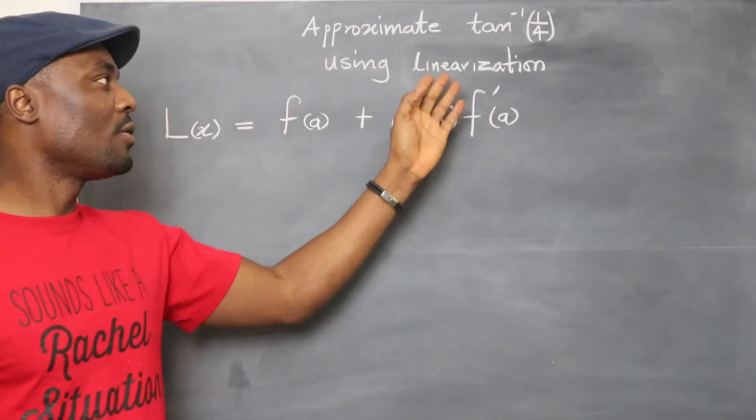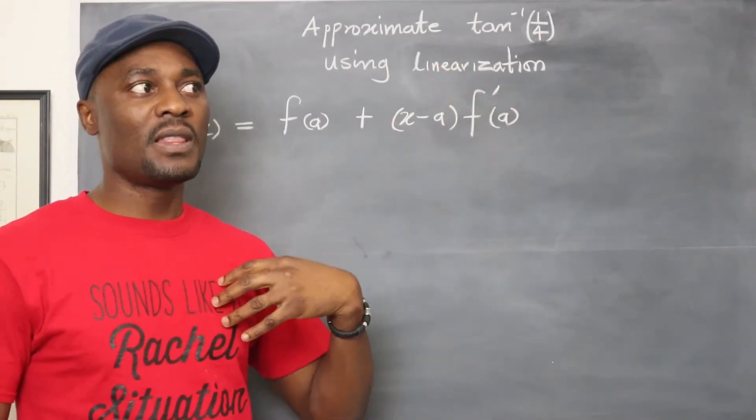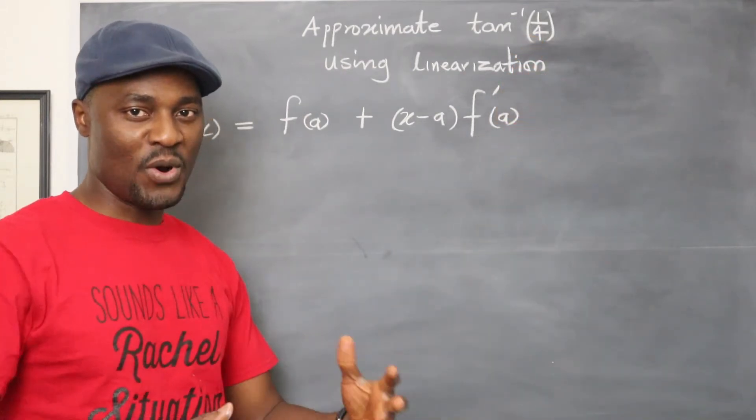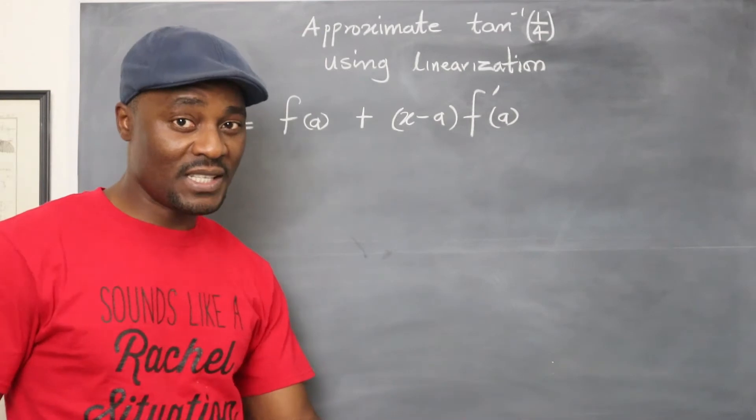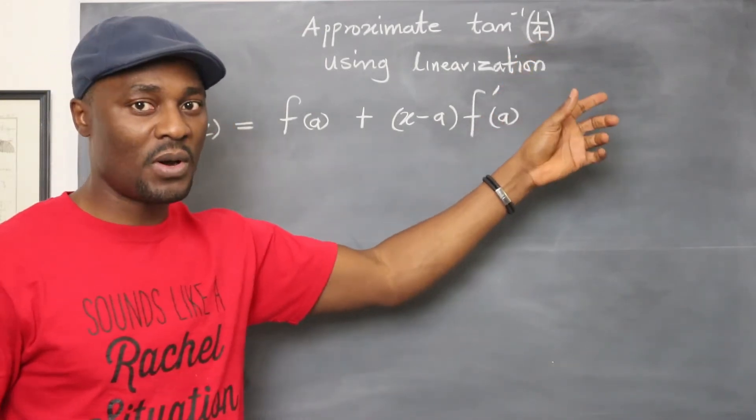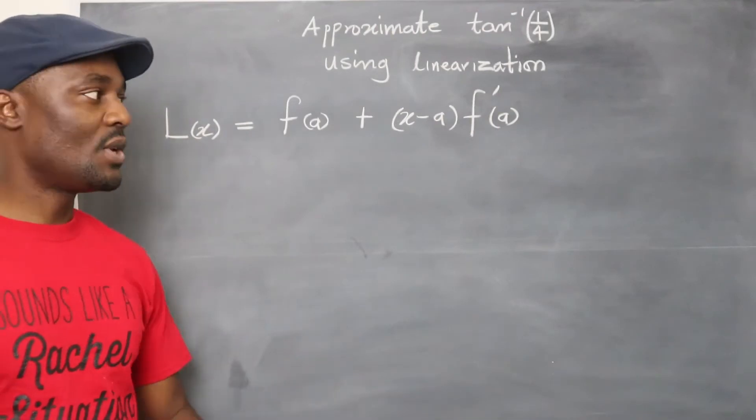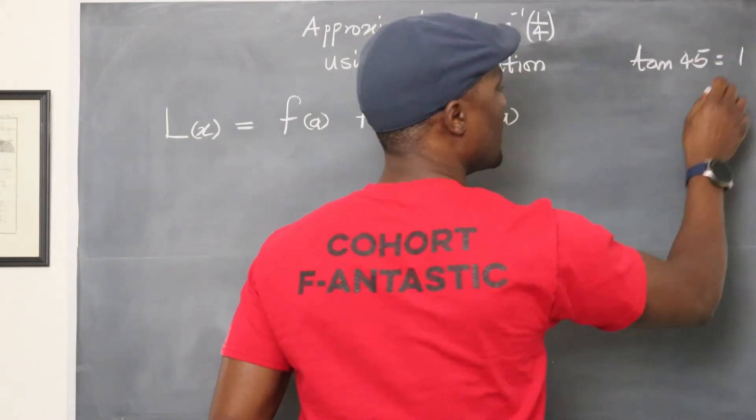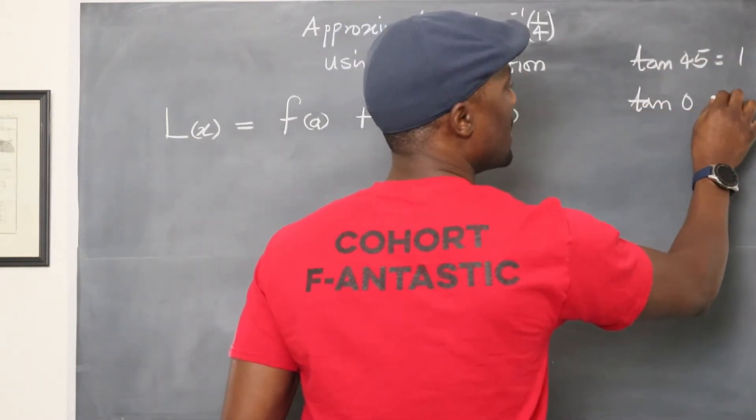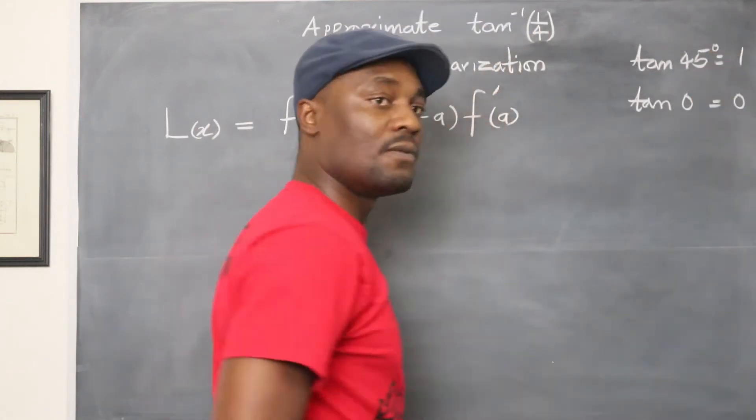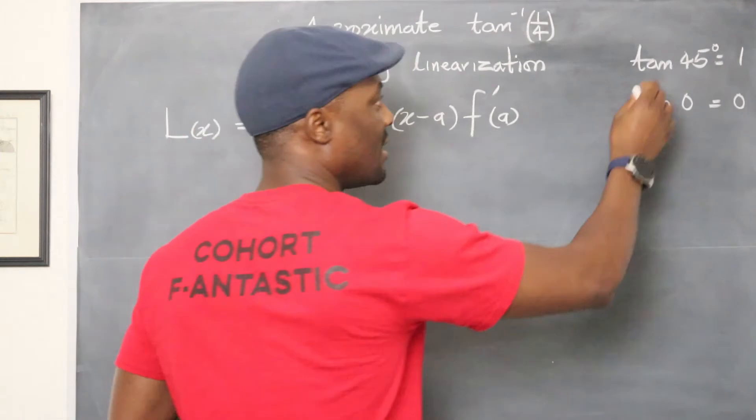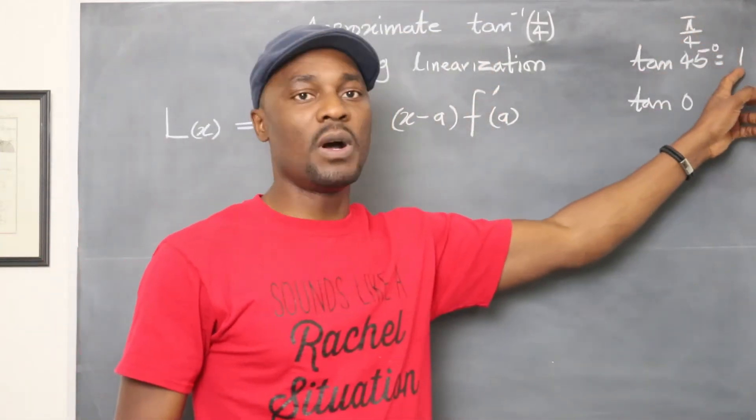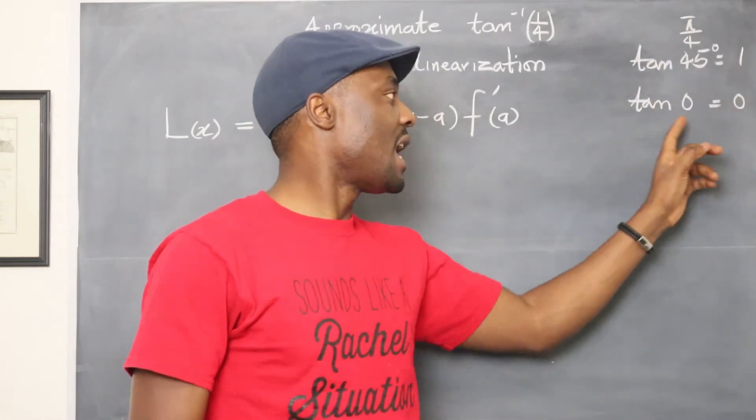So you just want to know, do I know the arc tan of any number that is not too far from one quarter? Well, there are two options for arc tan, 0 and 1 will work easily, but which one is closer to 1 over 4? And that's what you want to focus on. Because I know that tan 45 degrees equals 1 and tan 0 equals 0. In radians, that would be tan π/4 equals 1, tan 0 equals 0.